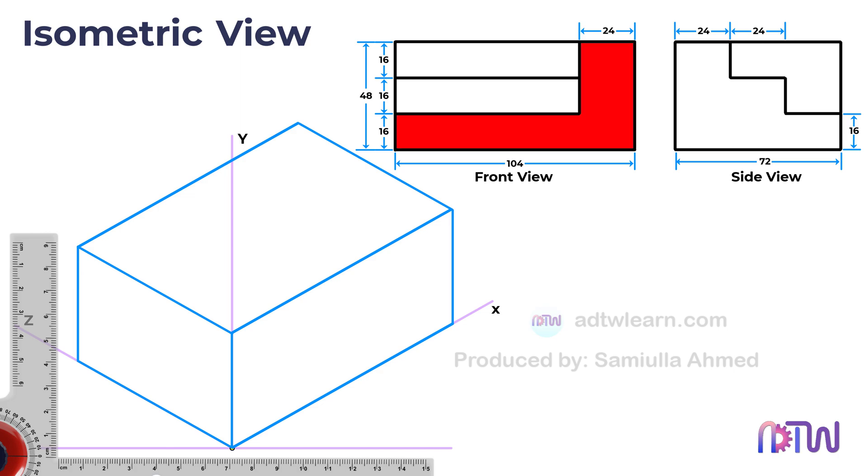We can see this part of the object has no solid lines. From the side view, we can see that this portion is in front of the object. Hence, we can construct this feature on the XY plane.